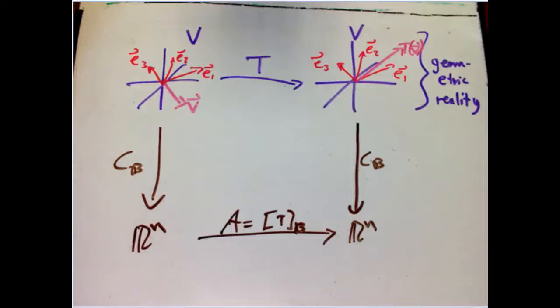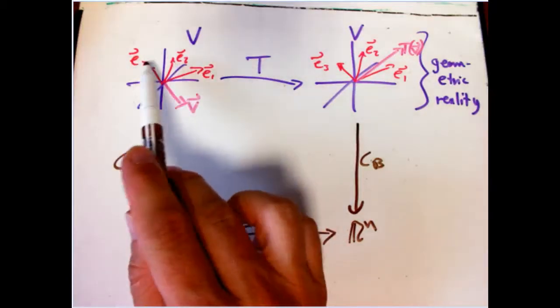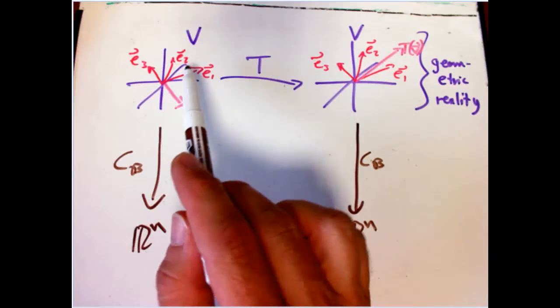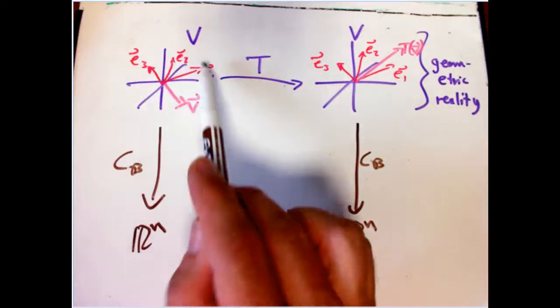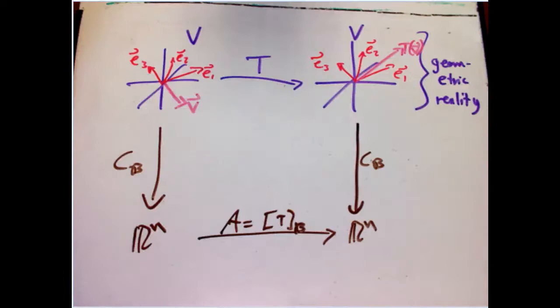I want to talk about the change of basis theorem in linear algebra. Here's the situation. We've got a finite dimensional vector space. That means it actually does have a basis in the usual sense, a finite number of vectors, say E1, E2, and E3, for example, in this three-dimensional example, such that every vector, any random vector V, can be built as a unique linear combination of those guys.